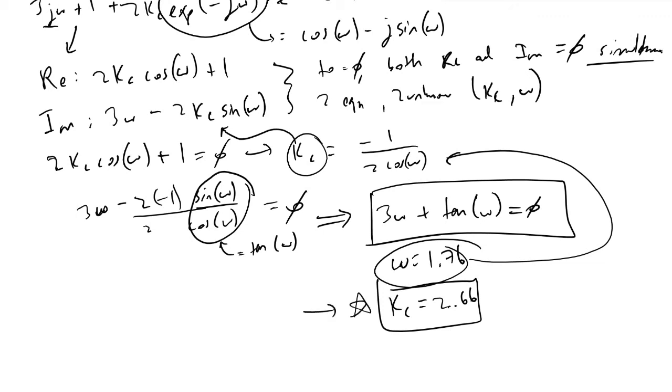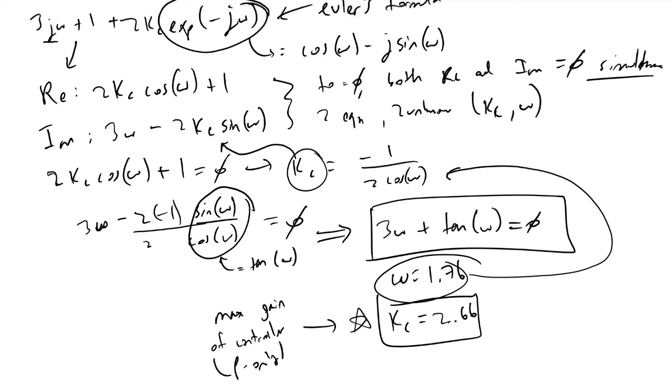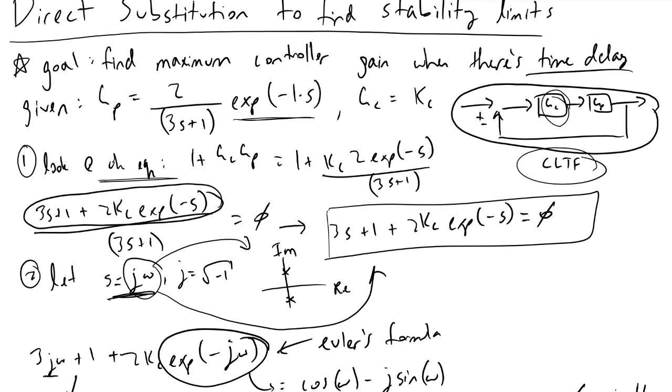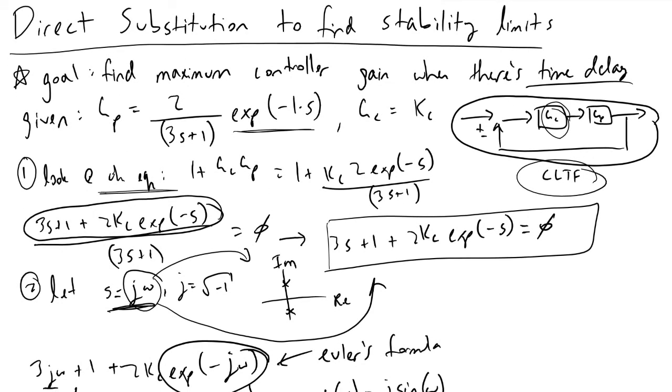What this value tells us is that the maximum gain of the controller—this is a P-only—we can have in our system before it becomes unstable.